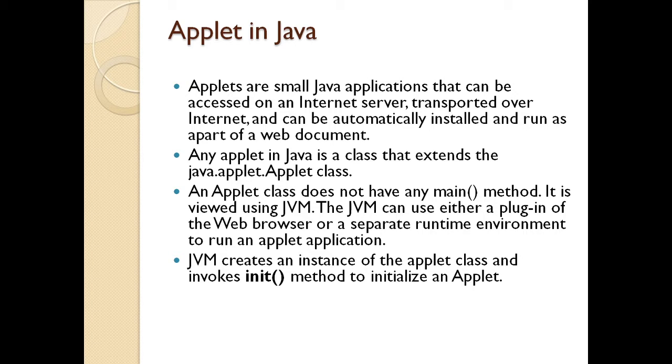An applet class does not have any main method. It is used using the JVM, Java Virtual Machine. It can use either a plugin in the web browser or a separate runtime environment to run an applet application. Now, JVM creates an instance of the applet class and invokes the init method to initialize an applet.